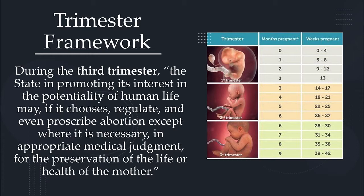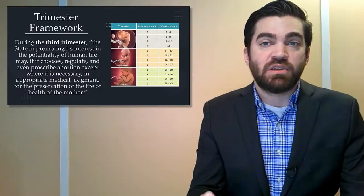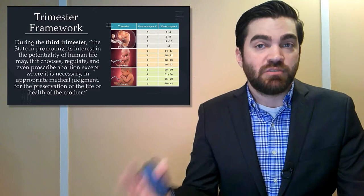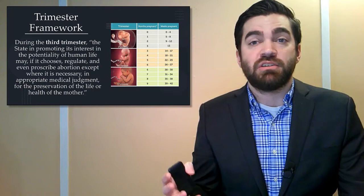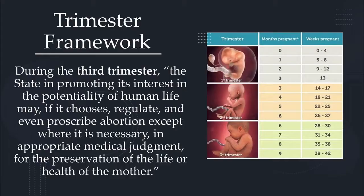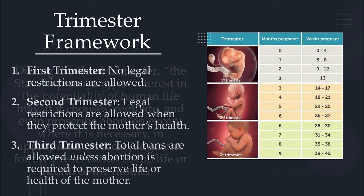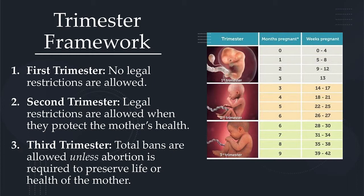During the third trimester, the court says the state, in promoting its interest in the potentiality of human life, may regulate and even prohibit abortion except where it is necessary in appropriate medical judgment for the preservation of the life or health of the mother. If a state wants to make abortion illegal during the third trimester they can do that, but they have to allow exceptions where abortion is needed to protect a mother's life or health. The third trimester is where states are given the most power to restrict access to abortion.